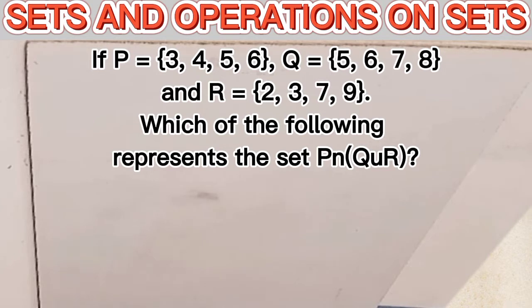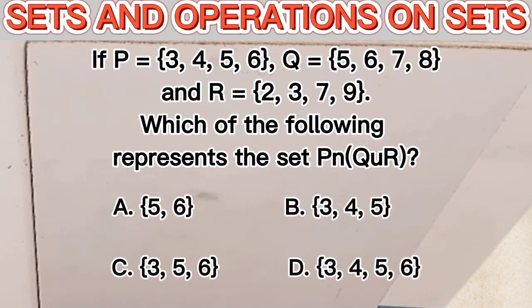While set R is also having members 2, 3, 7, 9. Which of the following options represent the set P intersection Q union R?